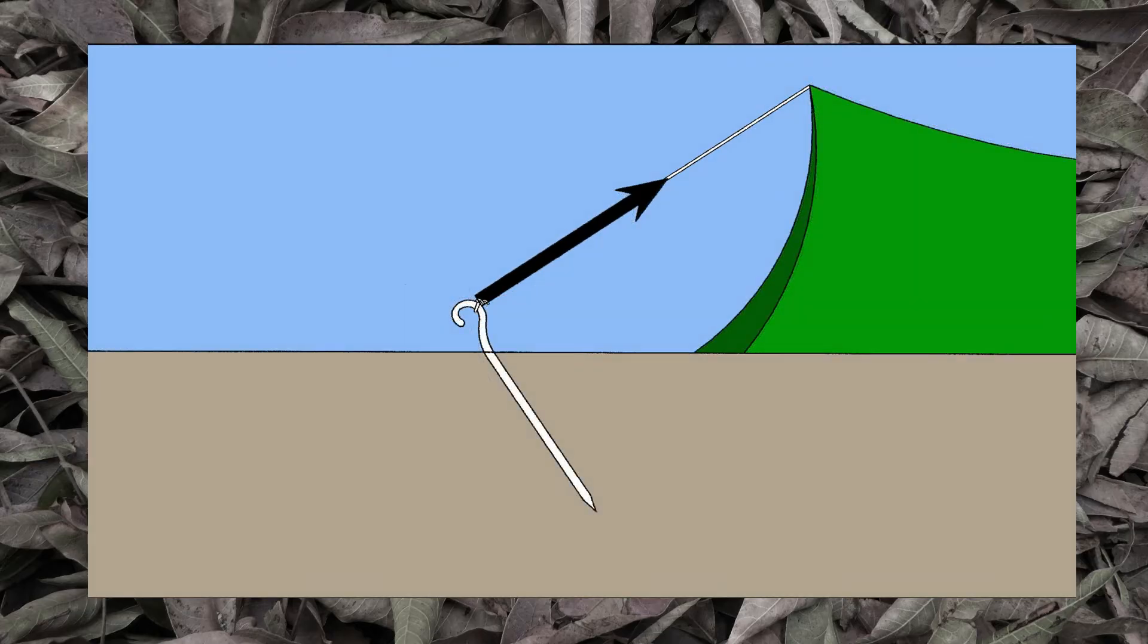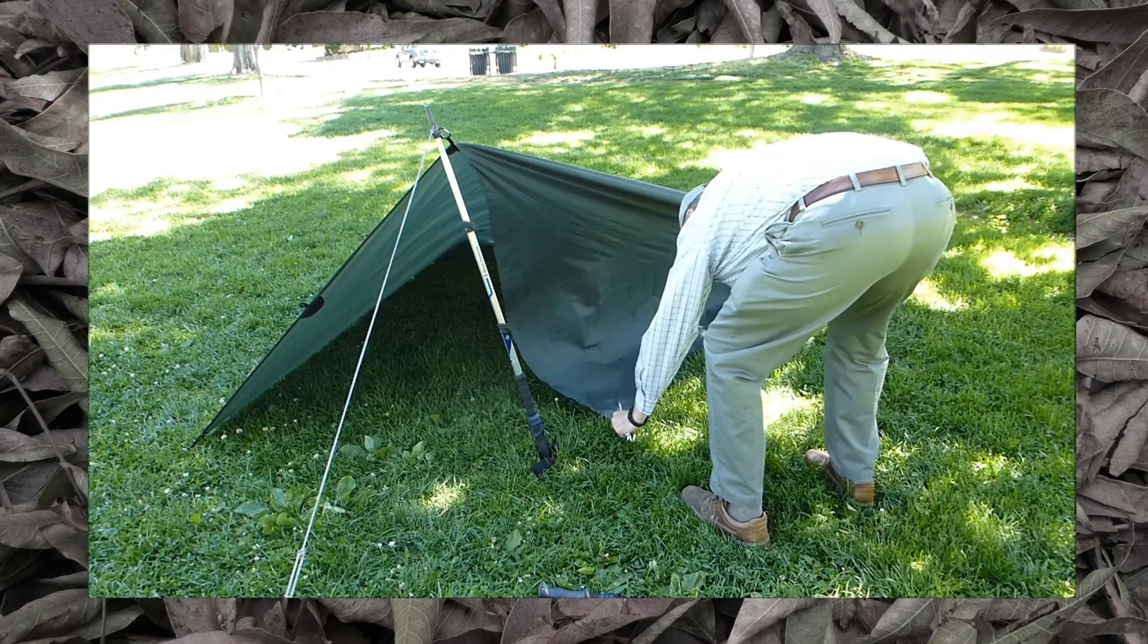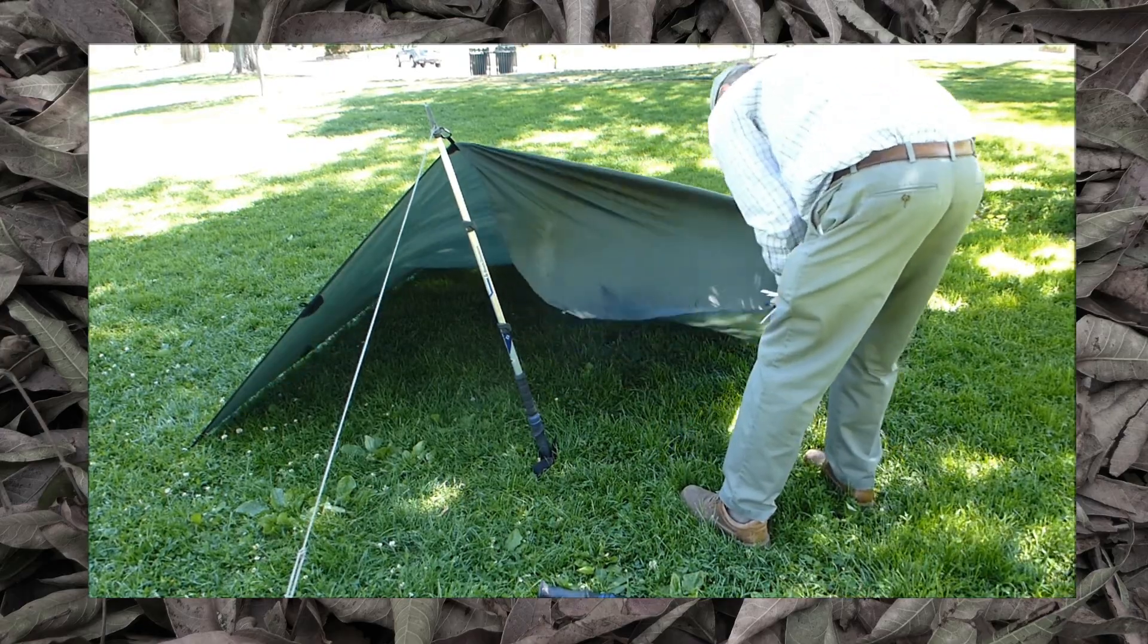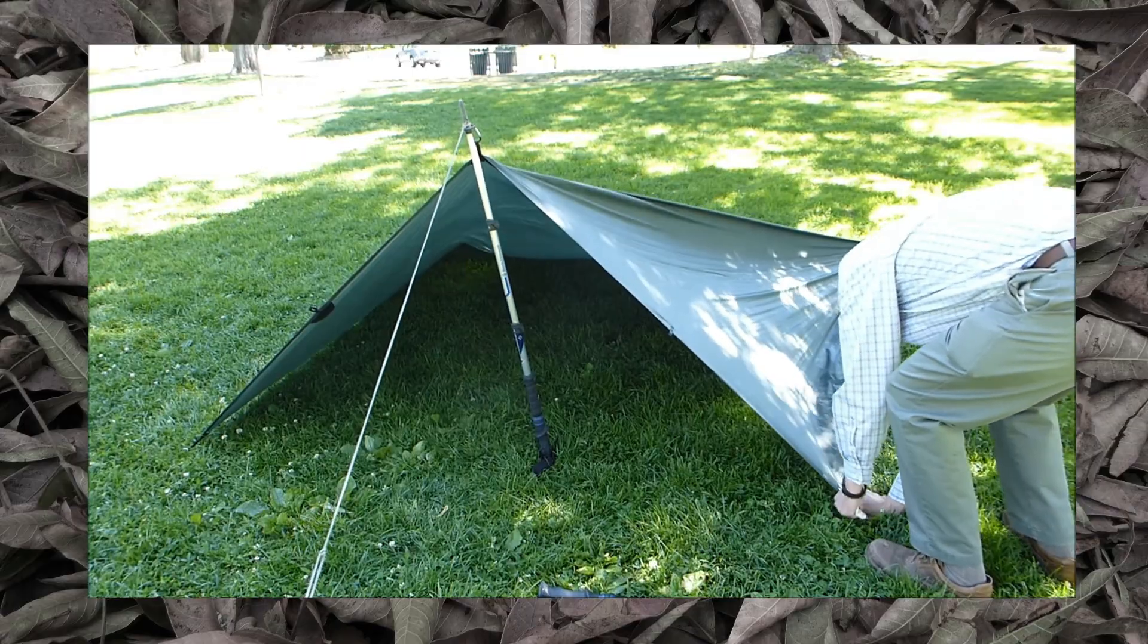There is, in fact, an optimum angle between the guy line and the stake. That angle is 90 degrees. The same rule applies if you're pegging the edge of a tarp directly to the ground. Insert the tent peg at a 90 degree angle to the tarp.